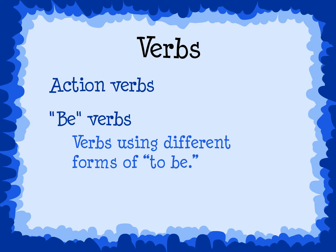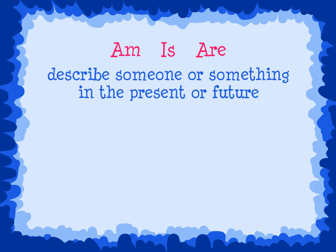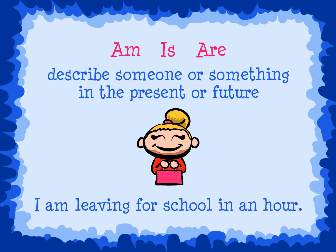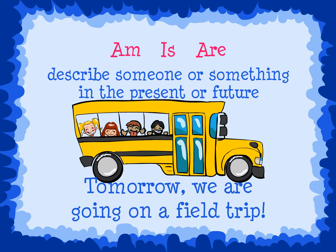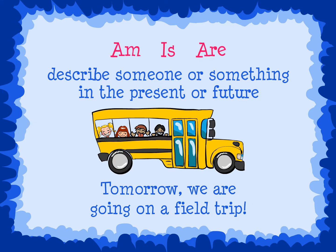Be verbs are verbs using different forms of 'to be.' The forms are am, is, are, was, and were. Am, is, and are describe someone or something in the present or future — in other words, what they are doing now or will do later. For example: 'I am leaving for school in an hour' — am is the verb. 'The snake is in the grass' — is is the verb. 'Tomorrow we are going on a field trip' — are is the verb. Am, is, and are are all be verbs.